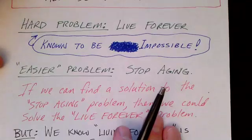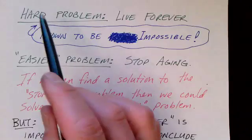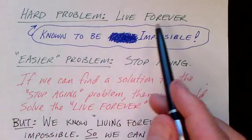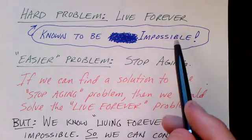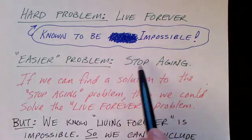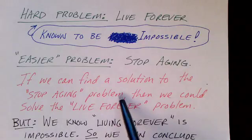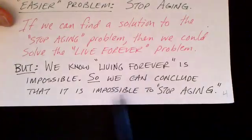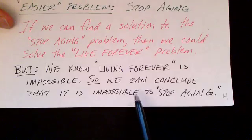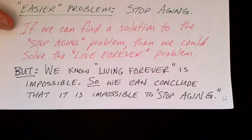Here's an informal example of the reverse logic — it's not a perfect example, but maybe it'll give you the idea of what's going on. Let's assume that the hard problem is to live forever, which we somehow know a priori to be impossible. The easier problem might be to stop aging. If we could find a solution to the stop-aging problem — if we could figure out how to stop aging — then we could solve the live-forever problem. But since we know that living forever is impossible, we can conclude that it's impossible to stop aging. Now let's turn and look more precisely at the logic we will be using.